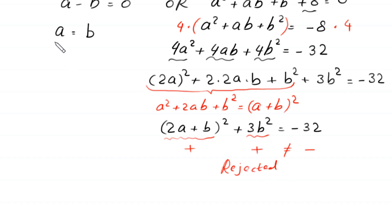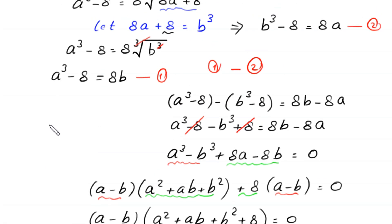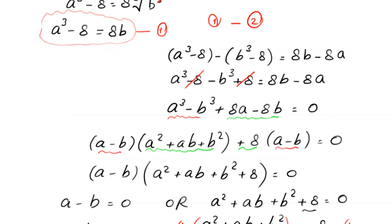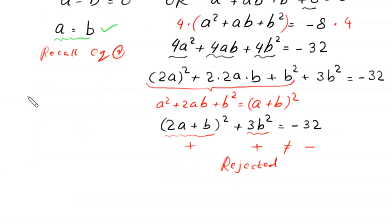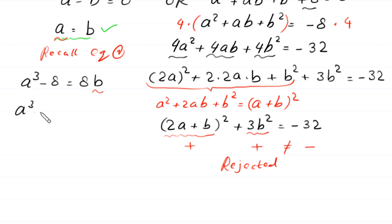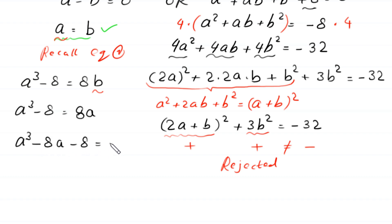We accept only a equals b. Recalling equation 1: a³ minus 8 equals 8b. We replace b with a, giving a³ minus 8 equals 8a. Moving 8a to the left-hand side, the equation becomes a³ minus 8a minus 8 equals 0.